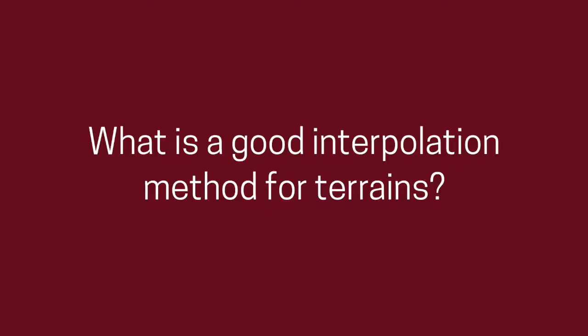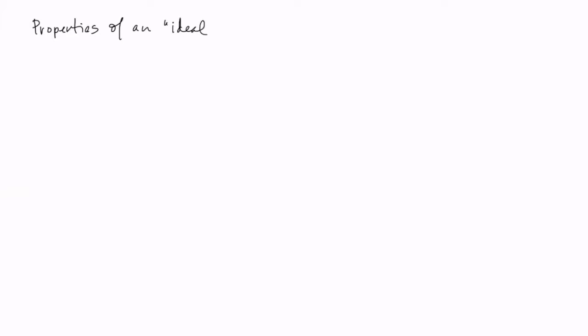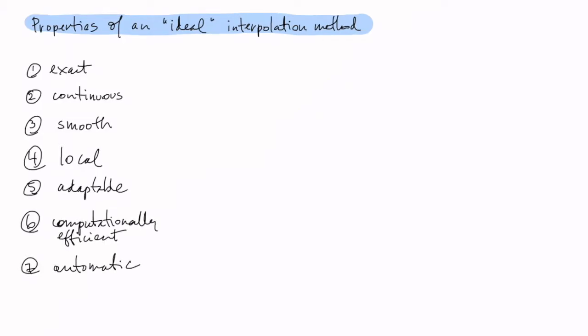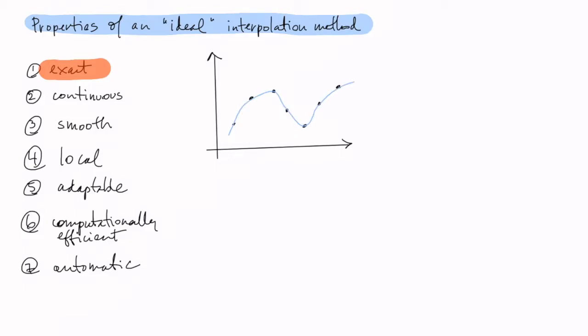Interpolation is used in several fields in engineering and sciences, and depending on the application, we want the interpolation method to have different properties. Here I'm listing seven properties of an ideal interpolation method — most come from the book 'Contouring' by Dave Watson. The first property is exactness: an exact interpolant creates a surface that honors the original samples that were collected to study the field.